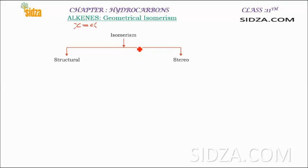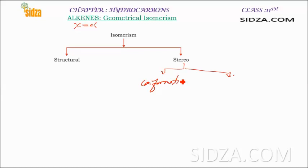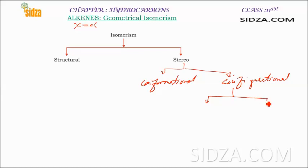Isomerism has been discussed completely in one of my other videos. I suggest you go over to that video to understand what structural and stereoisomers are. Isomerism is of two types: structural isomerism and stereoisomers. Stereoisomers can further be classified into two groups: conformational isomers and configurational isomers. Configurational isomers are of two types: geometrical isomerism and optical isomerism.